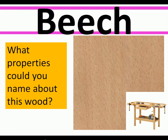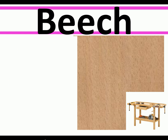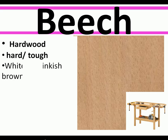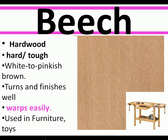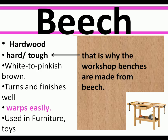Beech is a hardwood — again a tough wood with a light brown colour. It turns very well on a lathe and finishes well; you can polish it. It does warp, but it's widely used in furniture. Most workshop benches are made from beech because it is tough and makes a durable bench.